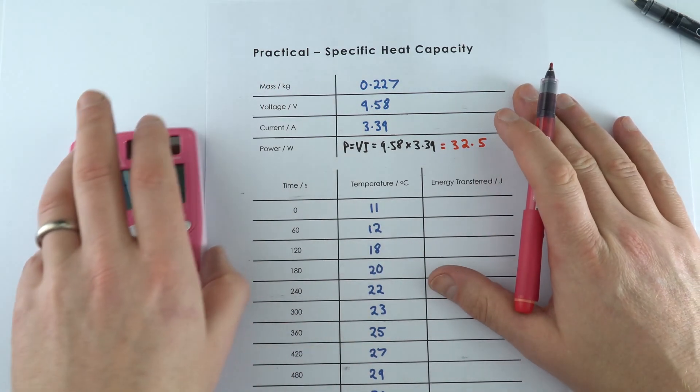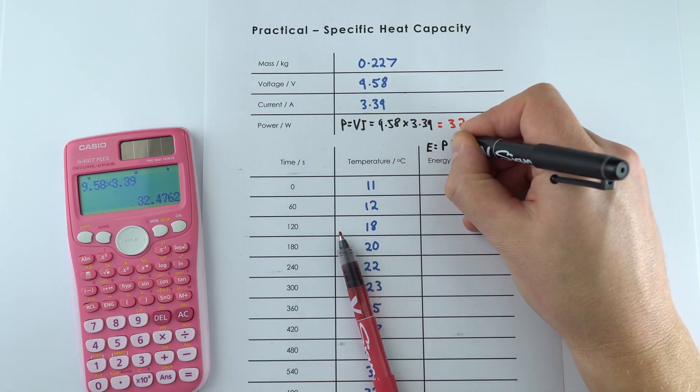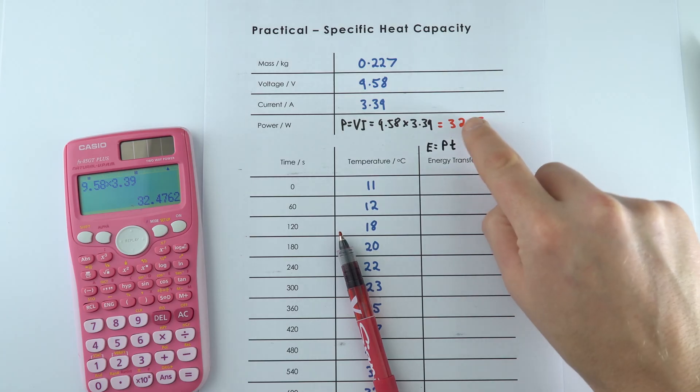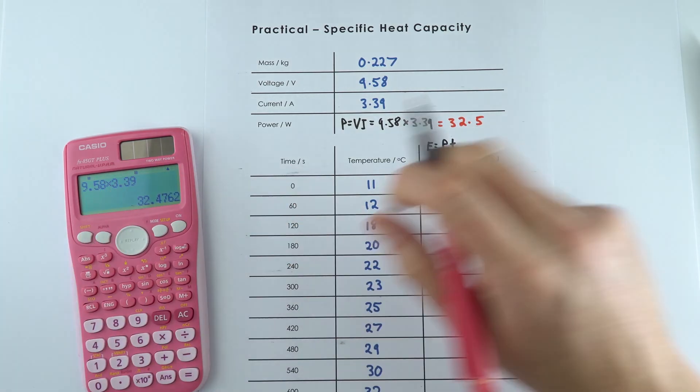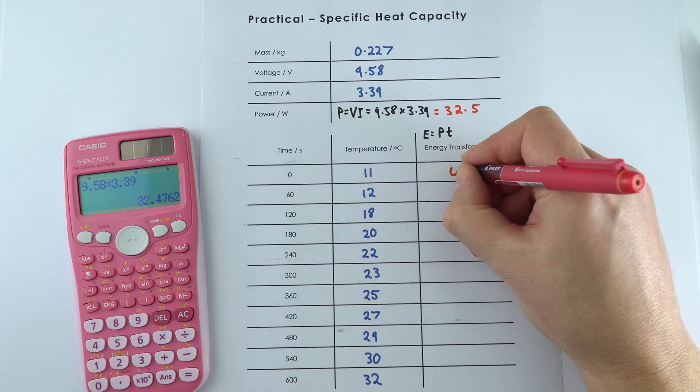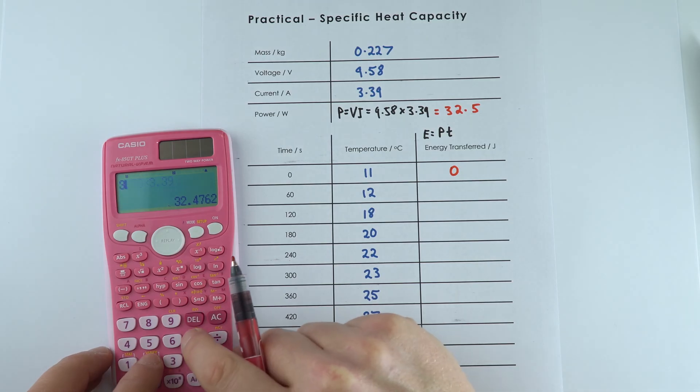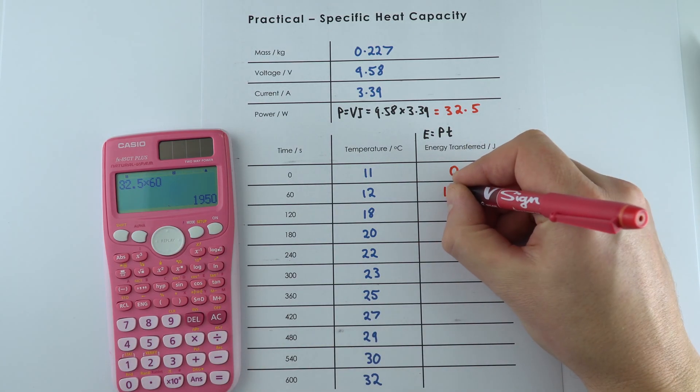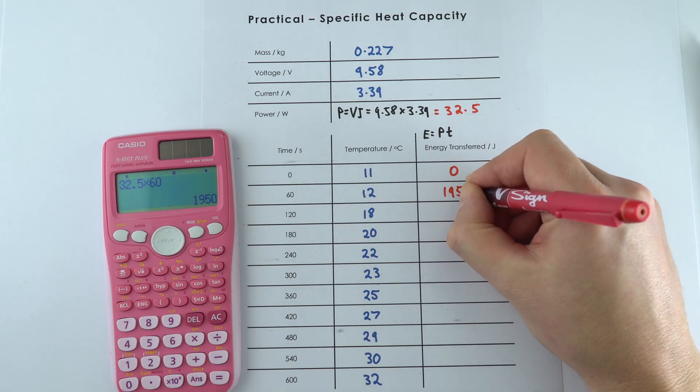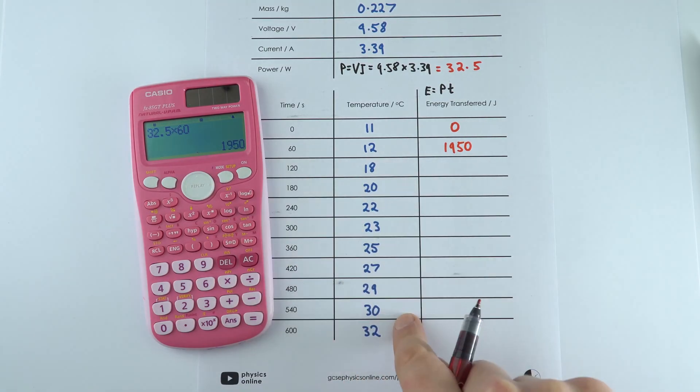Now to look at the energy transferred, the energy transferred is going to be equal to the power multiplied by the time. So we're going to use this power here multiplied by this time. When the time is 0, the energy transferred is 0. When the time is 60 seconds, we take 32.5 multiplied by 60, which equals 1,950 joules. And we're going to continue this for the rest of the table.